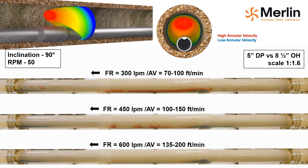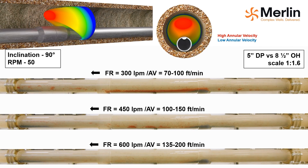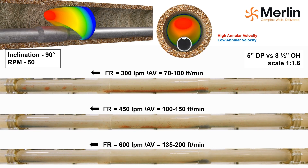Particles with two different densities were used to represent cuttings, with the blue particles being higher density than the red particles. The next comparison shows different flow rates in the same test section with a constant internal pipe speed of 50 RPM.